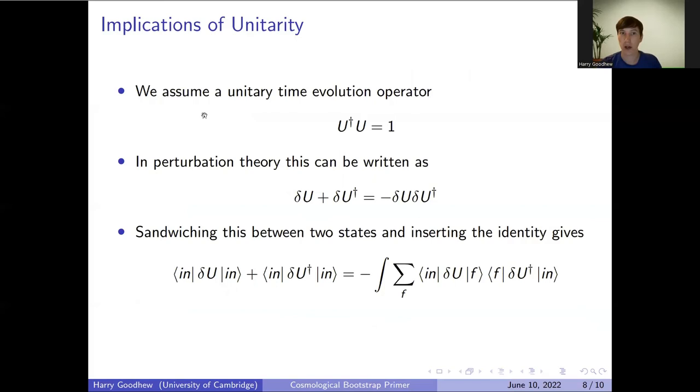Unitarity is often used in a set of related but distinct properties that quantum field theories might have. What I mean when I say unitarity here is perhaps the most naive meaning of unitarity, which is just that the time evolution operator is a unitary operator, so its conjugate transpose is its inverse. In perturbation theory, writing this time evolution operator as 1 + δU, we can express this constraint in this form, which will then allow us to make some statements in perturbation theory. Then we can sandwich this in between two states, and this gives us this relationship here.